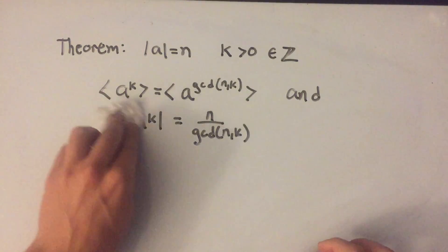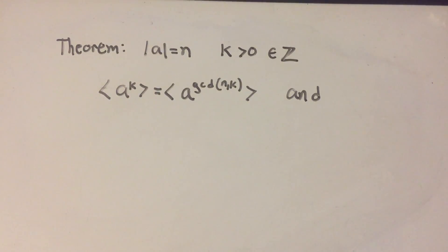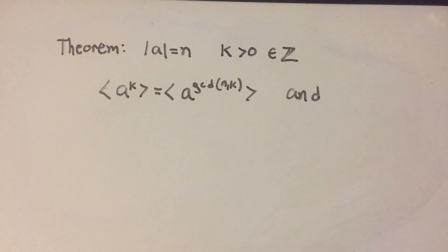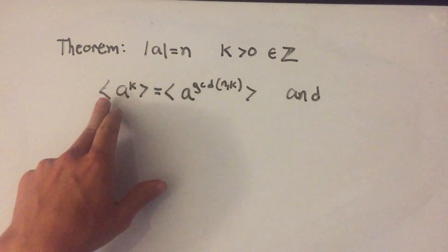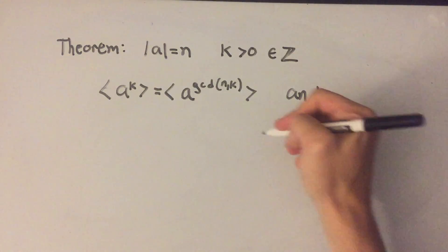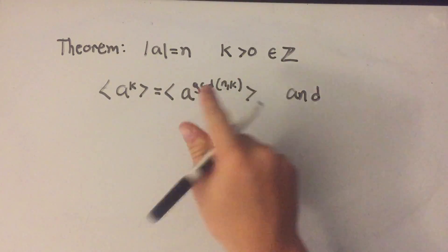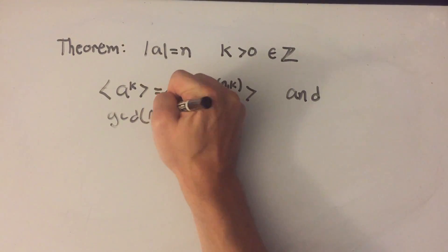I'm going to start with the first statement and show that these two sets are equal — the group generated by A to the k, and the group generated by A to the GCD of n and k. I'll do this through double inclusion: I'll show each set is contained in the other. To simplify notation, I'll call the GCD of n and k just d.